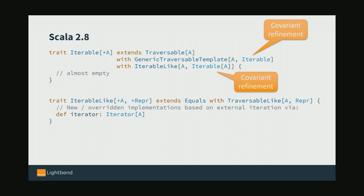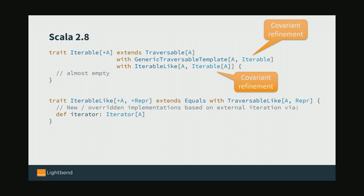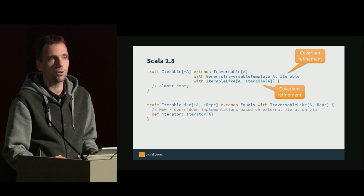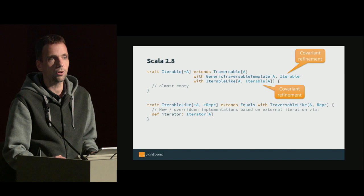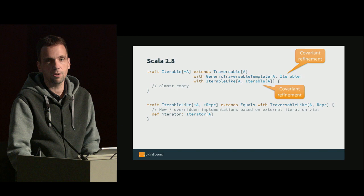With Iterable, we repeat the same story as Traversable. We have Iterable extending Traversable with GenericTraversableTemplate and IterableLike, with a covariant refinement on the second type parameter — so instead of Traversable we pass Iterable. That means all the methods that previously only returned a Traversable now return an Iterable when called on an Iterable collection. This is repeated all the way down the hierarchy so we always get the most precise type back. The main thing Iterable adds through IterableLike is an iterator method — back to external iteration — and we actually don't really need internal iteration since there isn't a single collection type that doesn't provide external iteration.